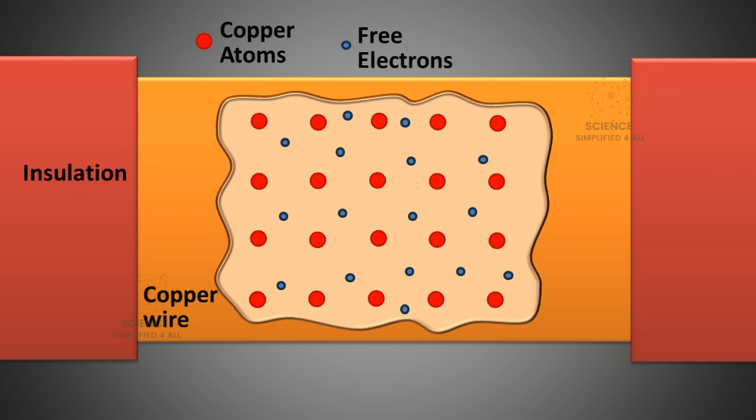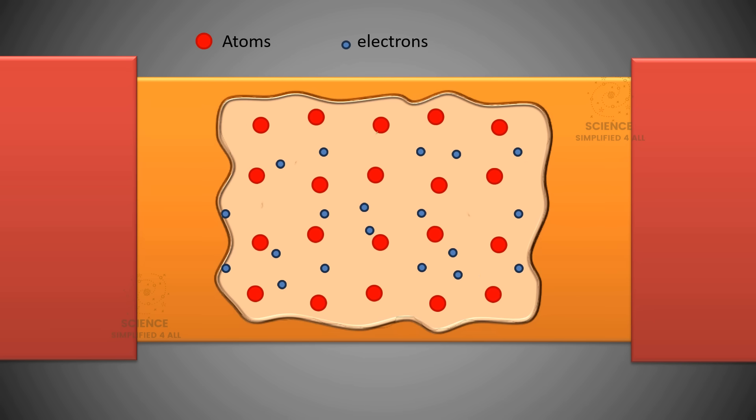Materials that allow electrons to flow easily are called conductors. Metals are generally good conductors because the outermost electrons in their atoms are only weakly bound. As a result, a metallic conductor or wire contains a large number of free electrons, and these free electrons are what allow current to flow through it. However, as these electrons move through the conductor, they constantly collide with atoms in the material and also with one another. This collision creates an obstruction to the flow of current, which we call resistance.